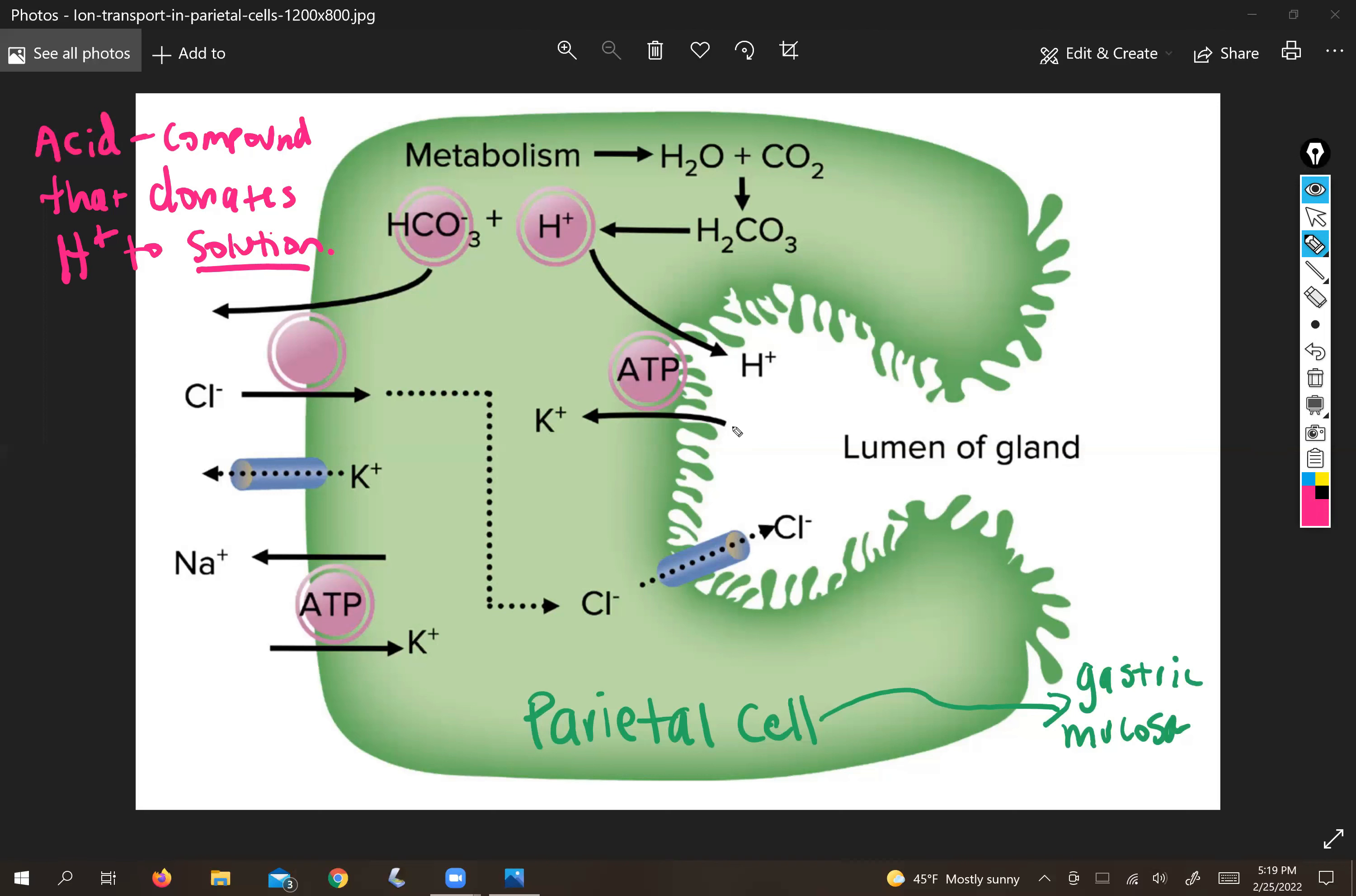So the goal is to create some kind of acid, and then once that acid dissociates in solution, which is what acids do, take the resulting proton and make sure that it ends up in the gastric lumen.